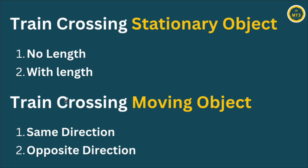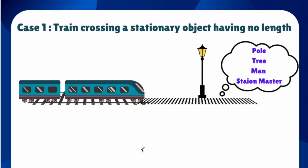In train problems, broadly you will see two types of questions: one is train crossing a stationary object, and the other is train crossing a moving object. For stationary objects there are two cases — object with no length, and object with some length. For moving objects there are two cases — same direction or opposite direction. So these four cases cover all train-related questions.